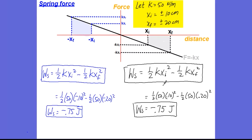In both compression and stretching cases, we get negative work done by the spring — even though compression is to the left and stretching is to the right. In both cases, the spring was moved further away from the equilibrium point. When the spring is moved further from equilibrium, the work done is negative. If we swap the numbers so the spring moves from further away to closer, the work done by the spring would be positive. So: displacement ending further from equilibrium gives negative work; ending closer gives positive work.